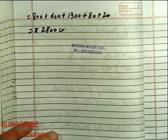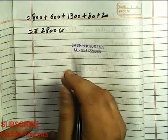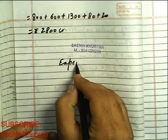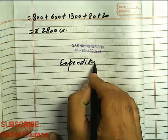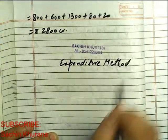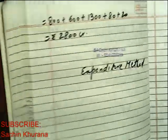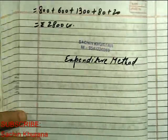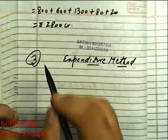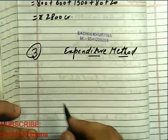Hello dear students, today for class plus two economics in national income we will discuss the expenditure method, which is the third and last method for the calculation of national income.